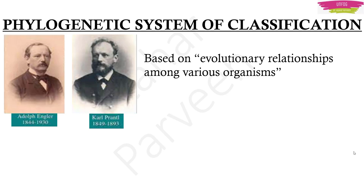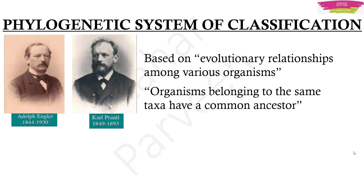This classification system states that organisms belonging to the same taxa have a common ancestor. We have this grouping hierarchy: Kingdom is the largest group, then below that Phylum or Division, then Class, then Order, then Family, then Genus, then Species. Organisms belonging to the same individual group — class, order, family — will have a common ancestor. That is what this classification system states.